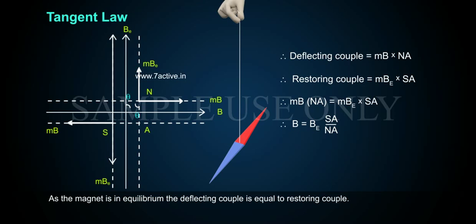Therefore, B equals BE SA by NA equals BE tan theta.